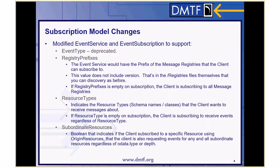Vendor message registries are accommodated as part of the model, but it became more clear that subscribing to specific registry prefixes and specific resource types made a lot more sense. We added a registry prefix that you can subscribe to, and it's enumerated in the service. The value doesn't include the version, but you can find the version when you get an event, or go to the registries collection to find what versions are in the implementation. If registry prefixes is empty on subscription, the client is subscribing to all message registries available.